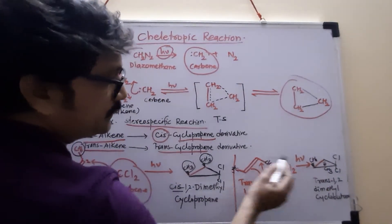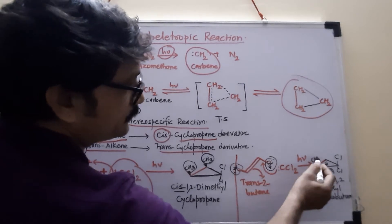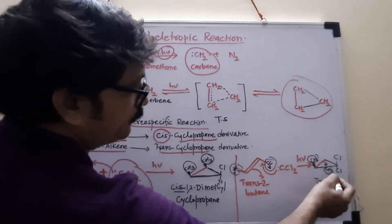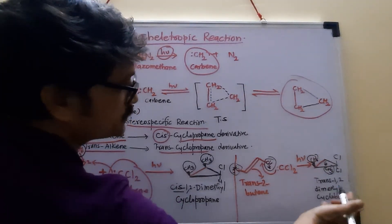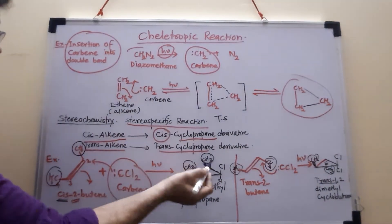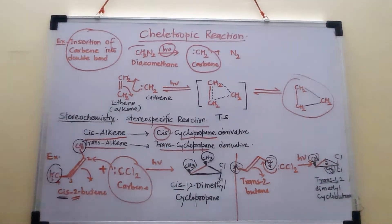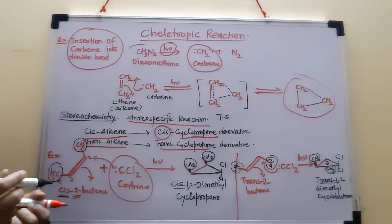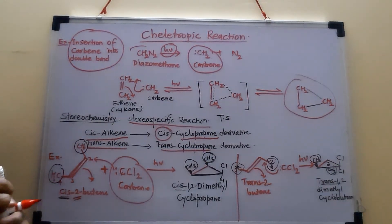So the same geometry, this methyl group up and this methyl group down to the ring of this cyclopropane. So it is again trans. So trans gives trans and cis gives cis. This is something about chelotropic reaction. Thank you so much.